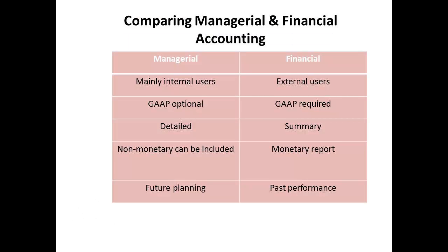Managerial accounting is mainly intended for internal users, whilst financial accounting is mainly for external users. The use of GAAP is optional for managerial accounting, but it is a requirement for financial accounting. Managerial reports can be as detailed as required, whilst financial reports are usually in summary form. Finally, managerial accounting is directed towards the future activity of the business, whilst financial accounting reports largely on events that have taken place.